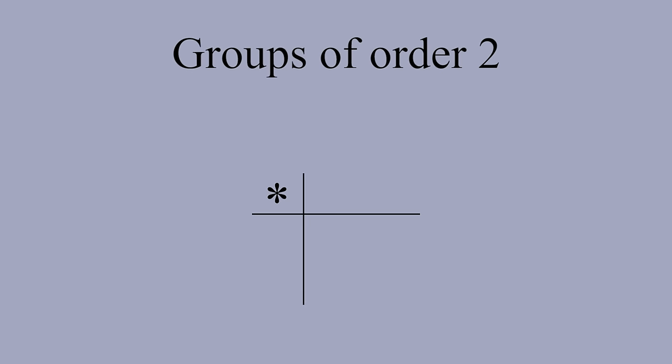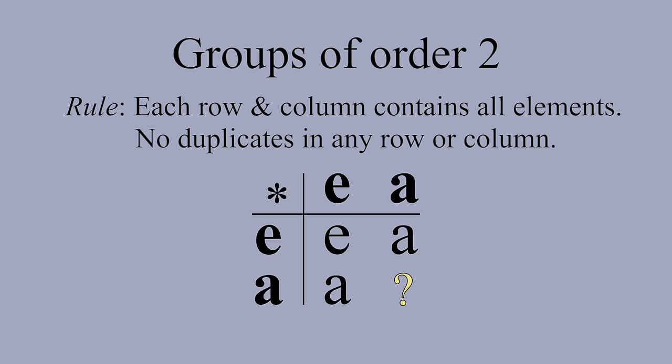Next, let's use multiplication tables to find all groups of order 2. We'll call the identity element E and the second element A. Since E is the identity element, E times E equals E, E times A equals A, and A times E equals A. This leaves only one empty square in the table. We can now use the rule we proved earlier. Every row and every column must contain all the group elements. There are no duplicates.